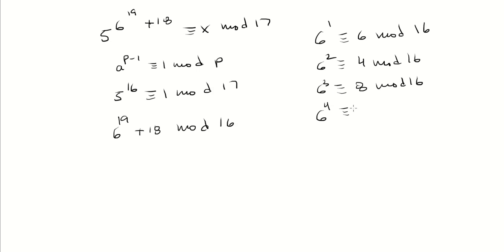And again, multiply by 6. 8 times 6 is 48, and 48 mod 16 is 0.